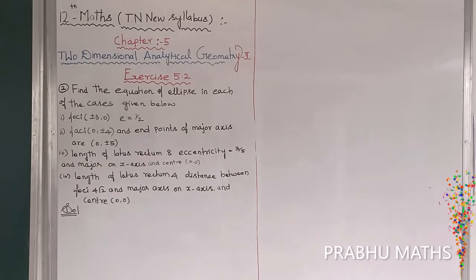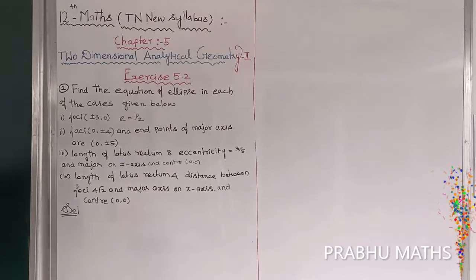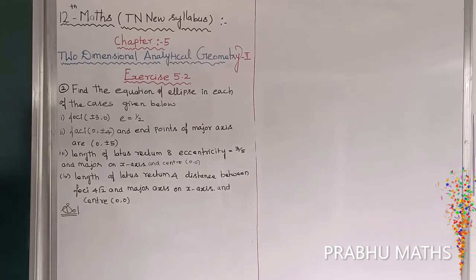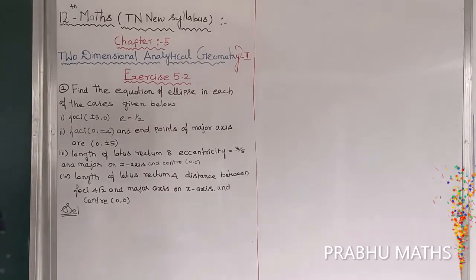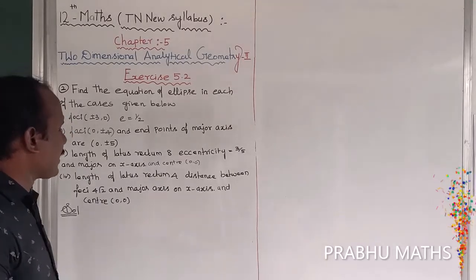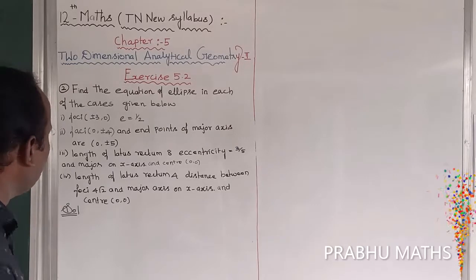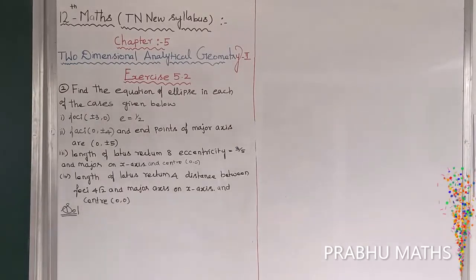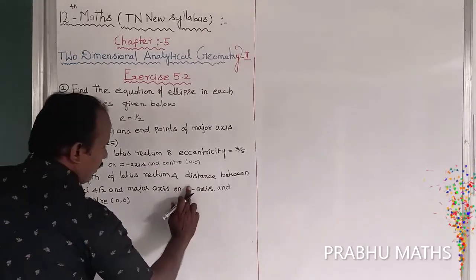Exercise 5.2, fourth subdivision. The length of the latus rectum is 4. The distance between the foci, which is called 2ae, is equal to 4√2. The major axis is along the y-axis, with center at (0,0).